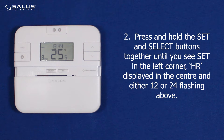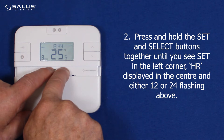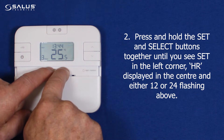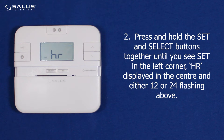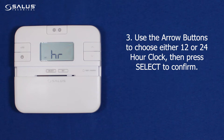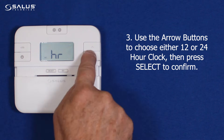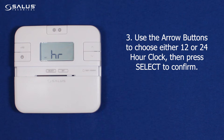Step 2: Press and hold the set and select buttons together until you see 'set' in the left corner, 'HR' displayed in the center, and either 12 or 24 flashing above. Use the arrow buttons to choose either 12 or 24 hour clock, then press select to confirm.